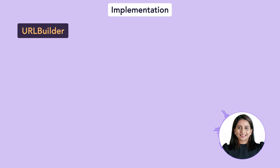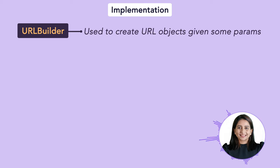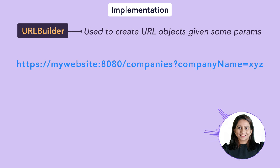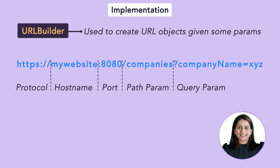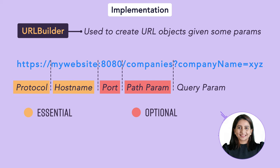We need to implement a URL builder that forms a URL given some parameters. A URL is composed of protocol, hostname, port, path param, and query param. Every URL needs protocol and hostname, but port, path param, and query param are optional. You can see the different constructor combinations required if you go with the normal constructor method — this is the problem builder pattern solves.